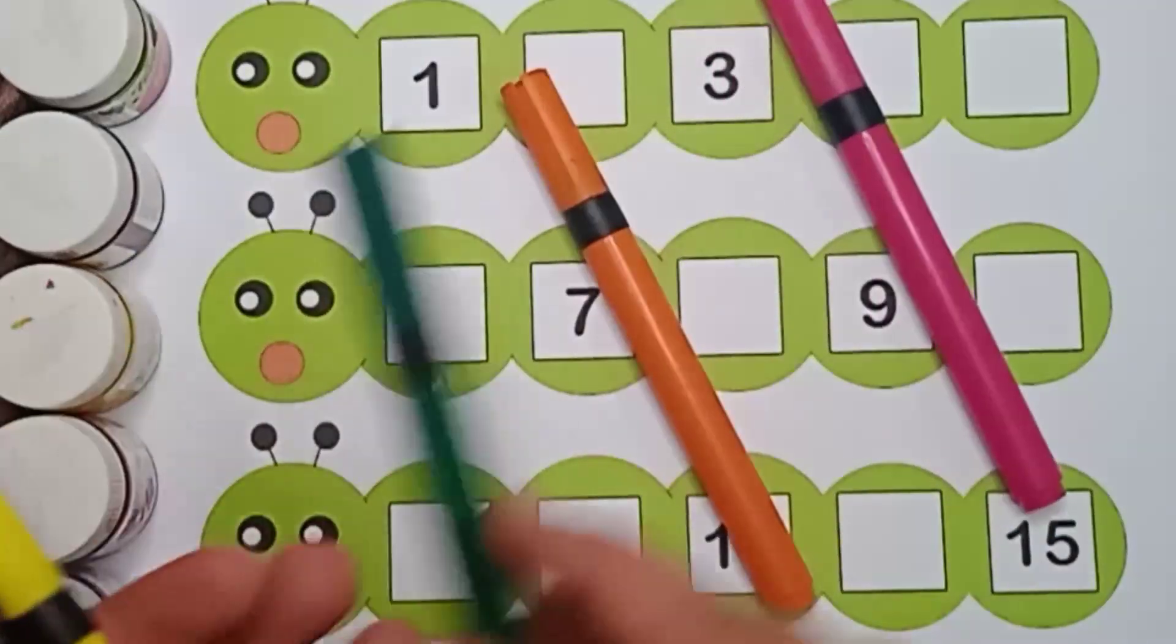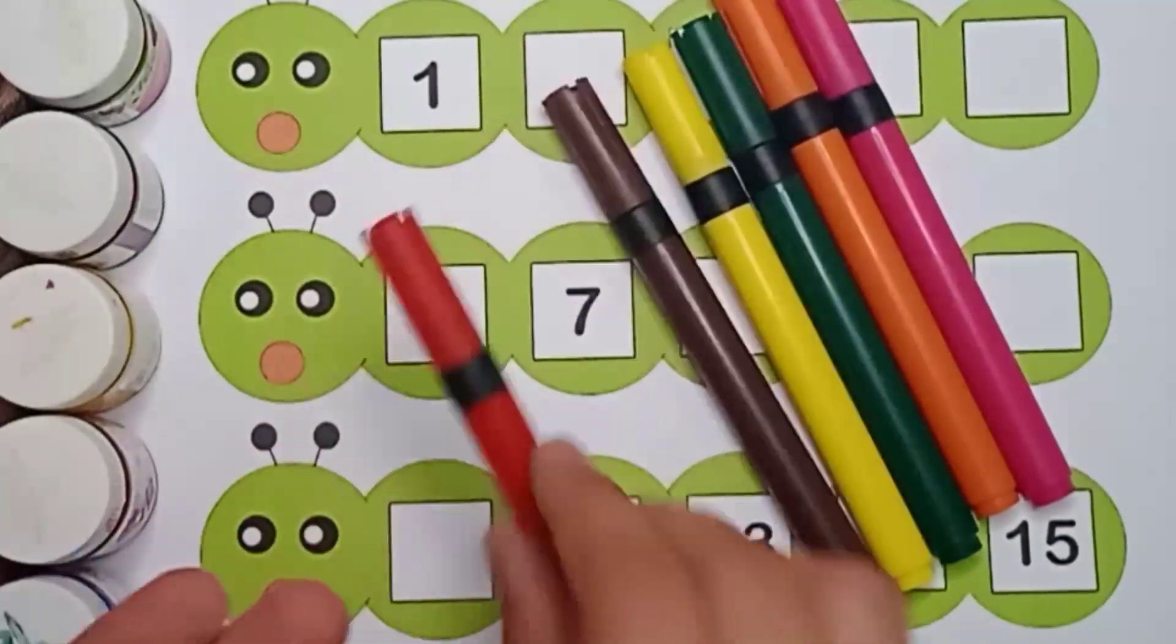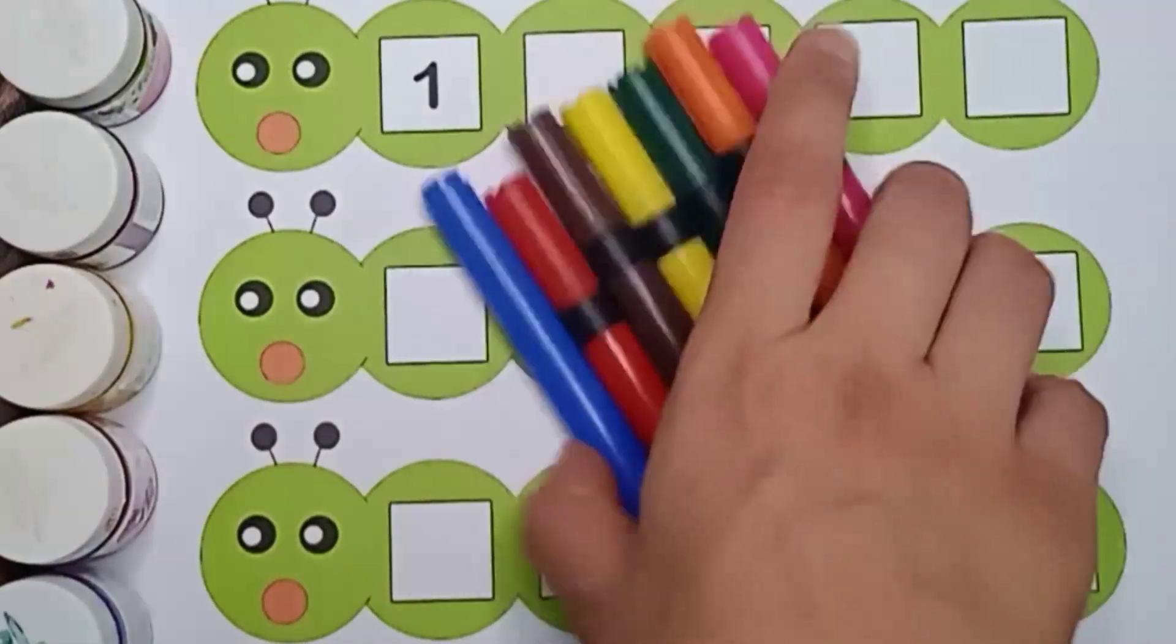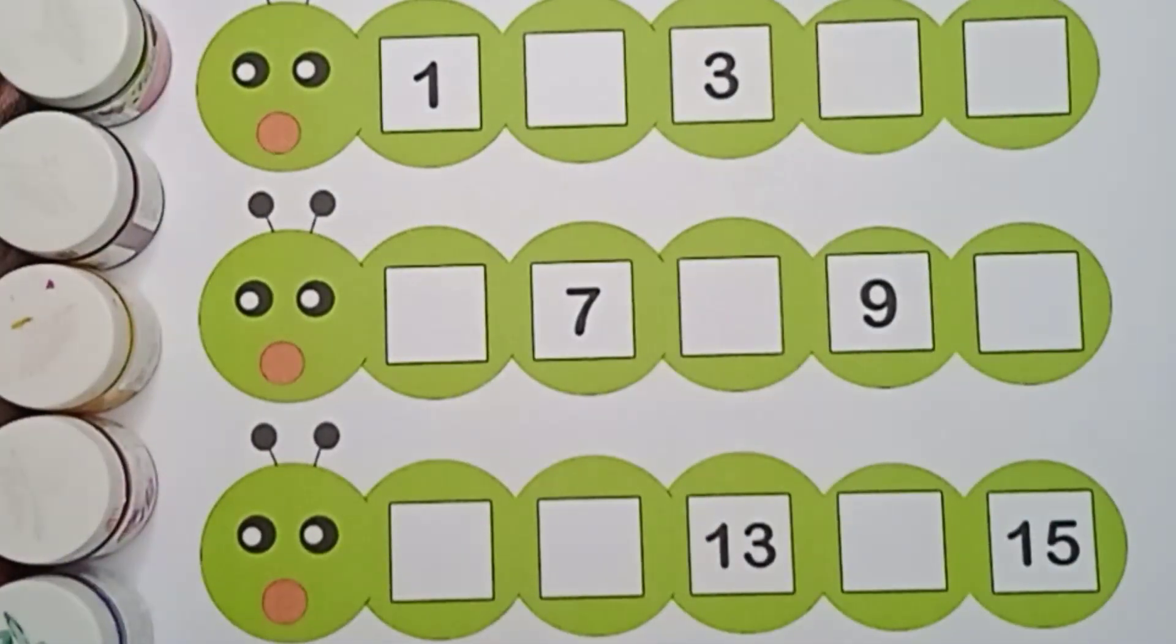1, 2, 3, 4, 5, 6, 7. There are 7 colors.